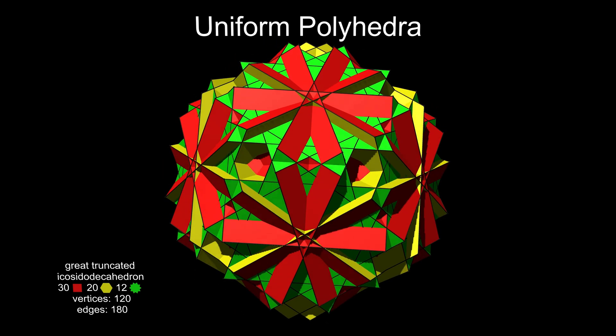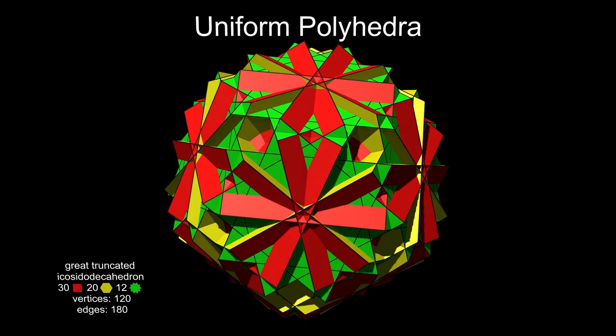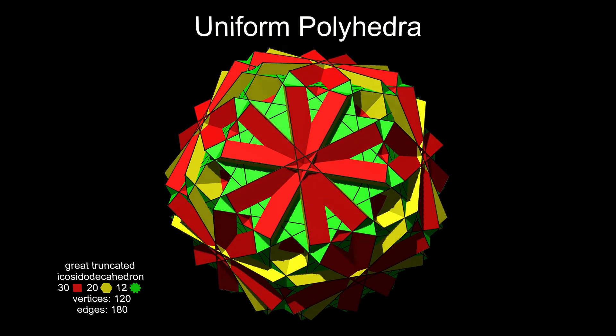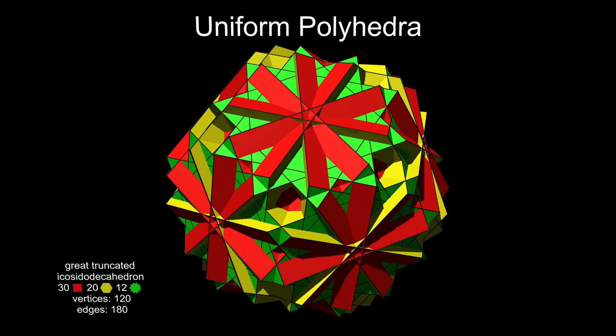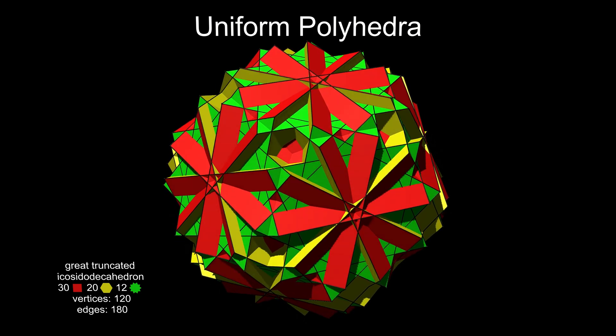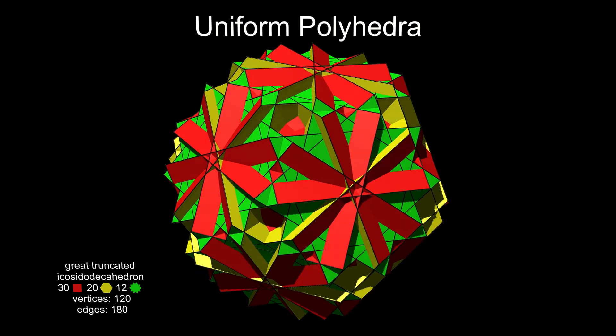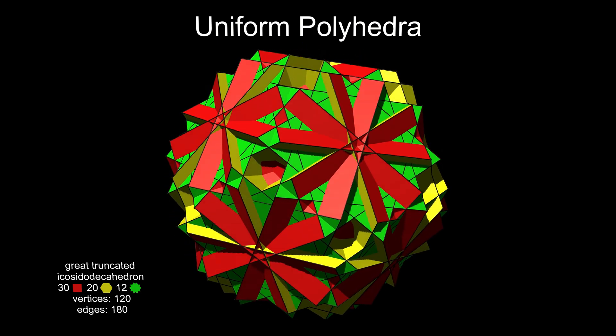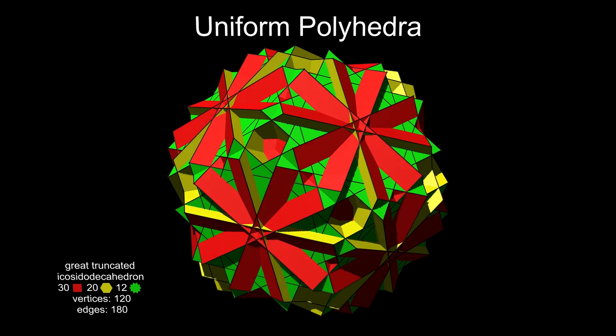As with the dodeca-dodecahedron, the great icosahedrodecahedron doesn't truncate because of its pentagrams. But there is a quasi-truncation — this magnificent shape.